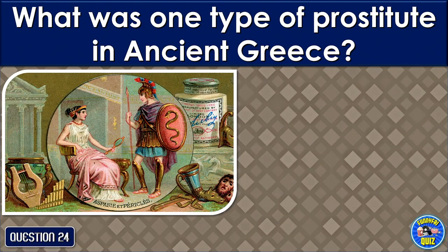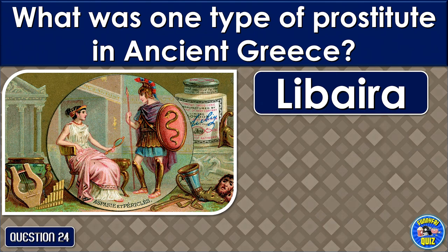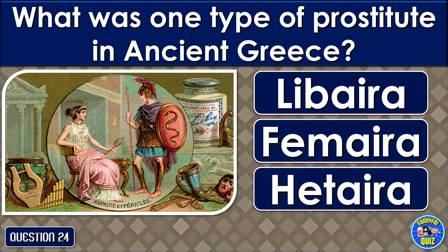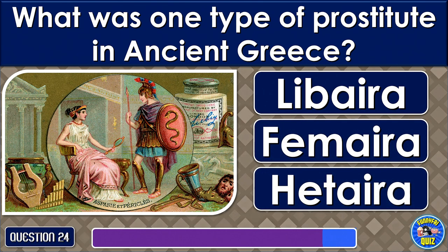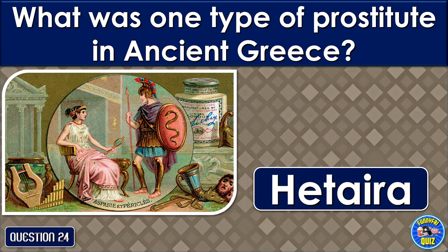What was one type of prostitute in ancient Greece? Hetaira.